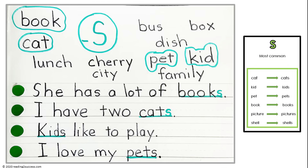Next, write the 11 words shown in the top section of this example. Have kids circle the four words that need an s to make them plural.